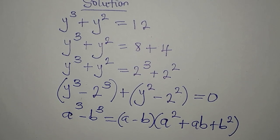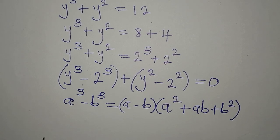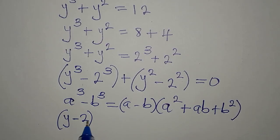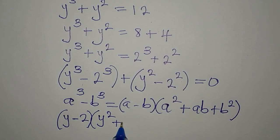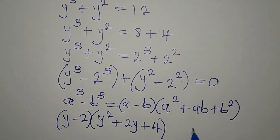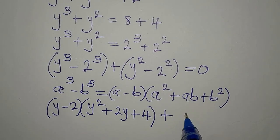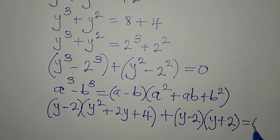Applying the identity where a is y and b is 2, we get (y minus 2)(y² + 2y + 4). Then applying the difference of two squares, we get plus (y minus 2)(y plus 2), and we equate to zero.